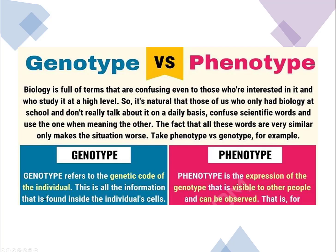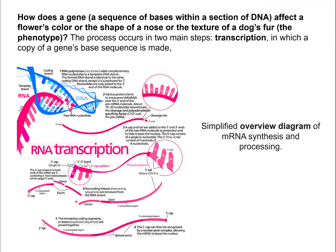Another way to look at these terms: a genotype is the genetic code of the individual, and a phenotype is the expression of that code. It's visible to others and can be observed. So how does a gene — a sequence of bases within a section of DNA — affect something like a flower's color or the shape of a nose?